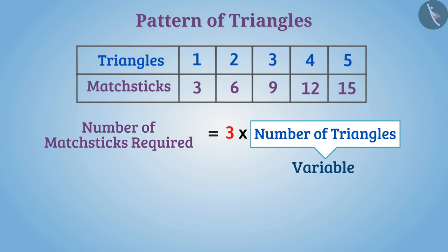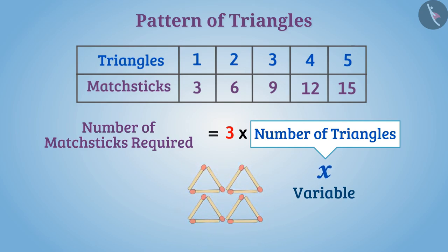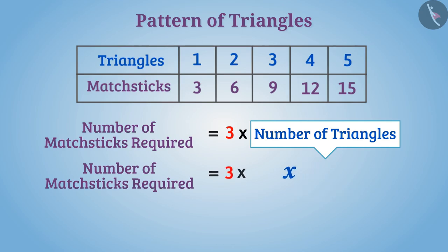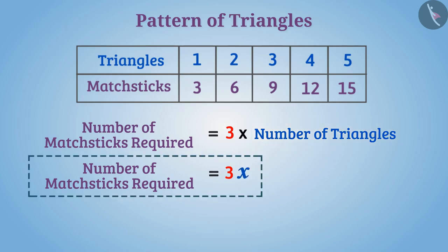For our convenience, we can use the letter of English language such as a, b, c and so on in the place of such a number. For example, here instead of number of triangles we will use letter x. Like the number of triangles, variable x can also take values one, two, three, or any other natural number. In this way, for x triangles in the pattern, number of matchsticks required will be three multiplied by x. It is written briefly 3x. With the use of variable x we have written the general rule for the pattern of triangles.